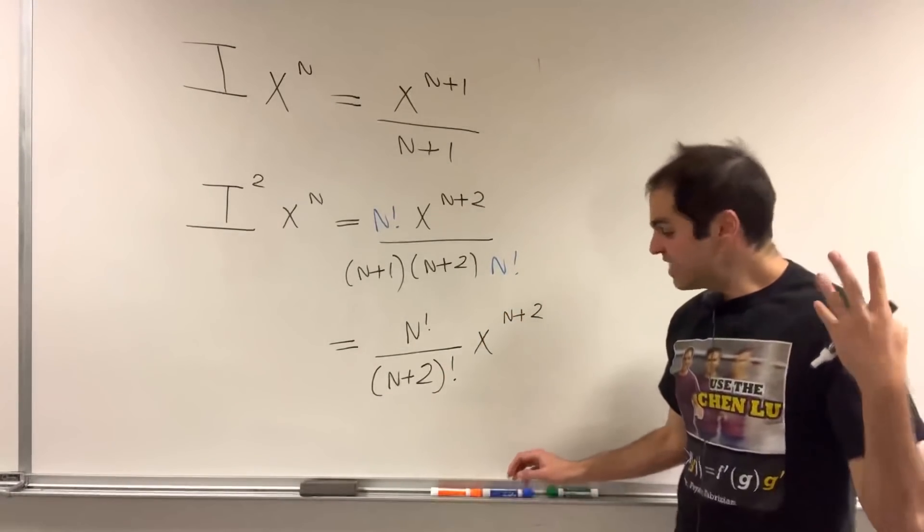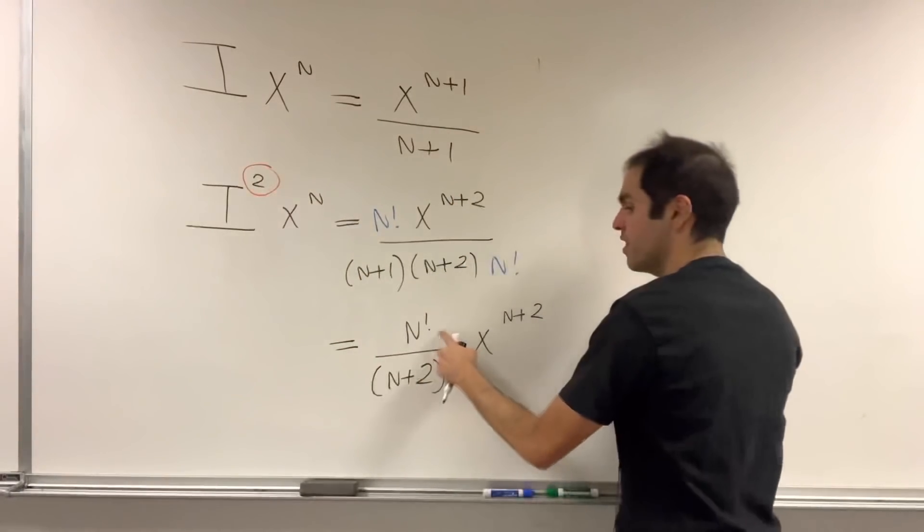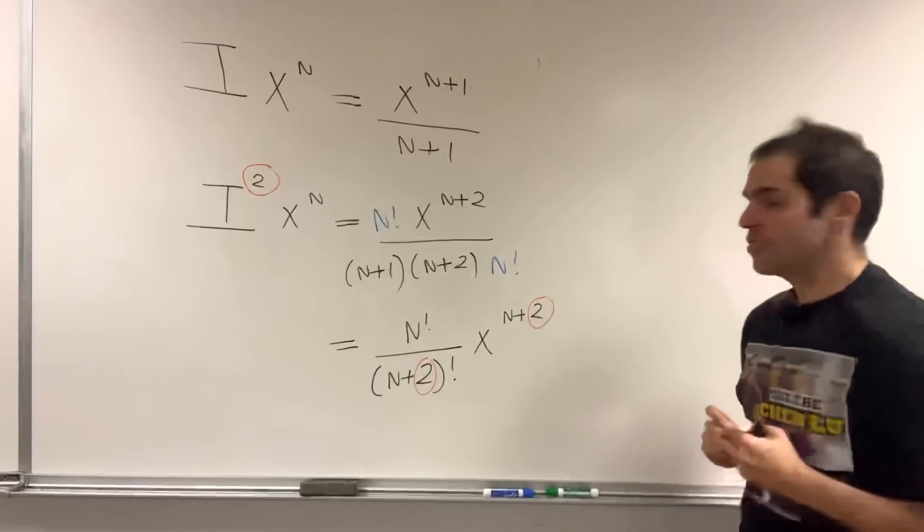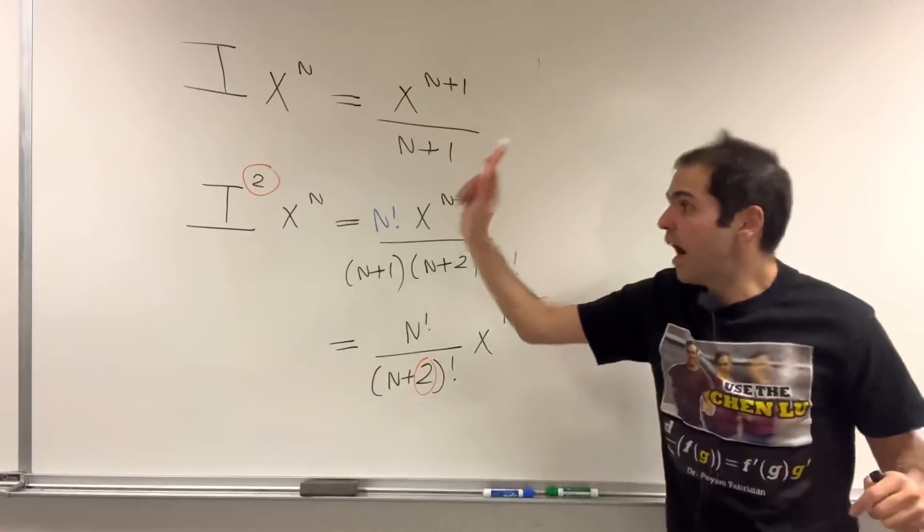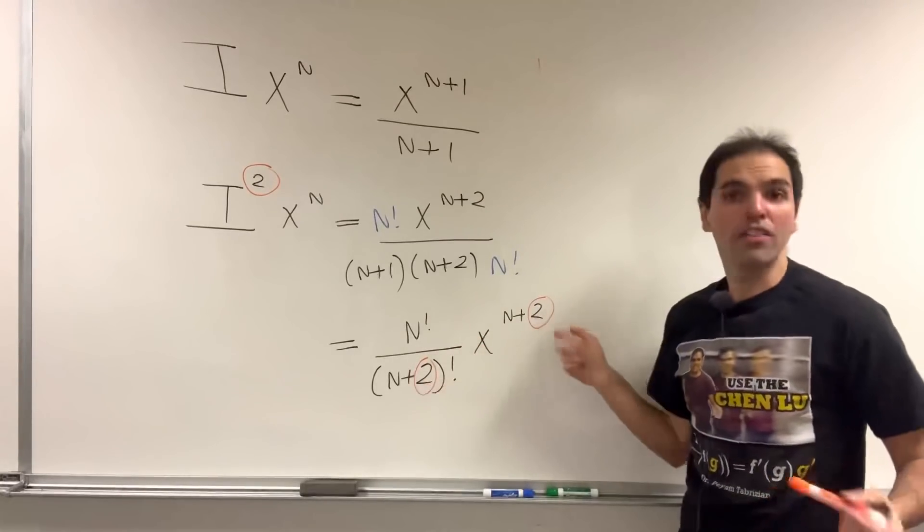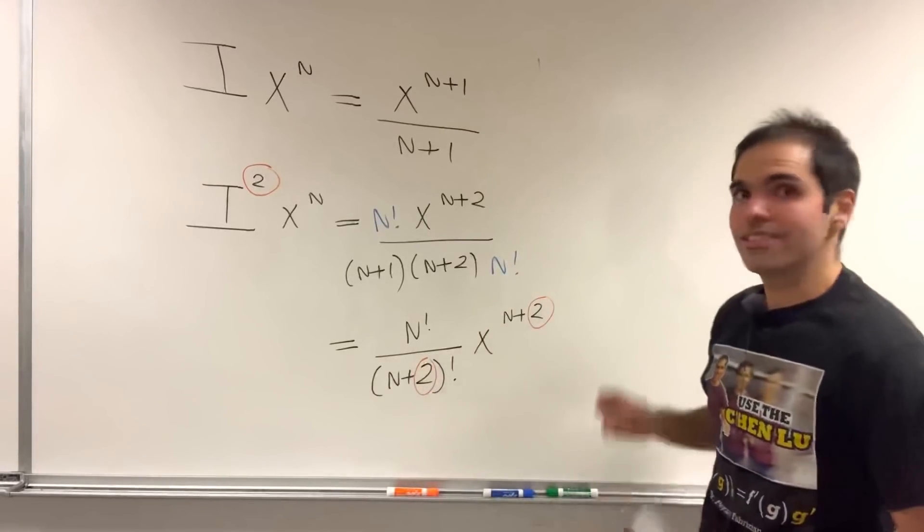So since the double integral of x to the n becomes this over n plus 2 factorial times x to the n plus 2, you may suggest that the half integral of x to the n is the same thing, but with 1 half. And indeed, that's a very good ansatz that we'll follow.